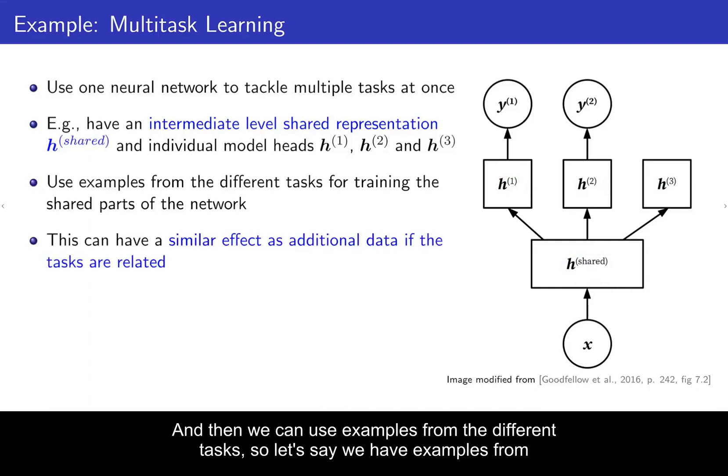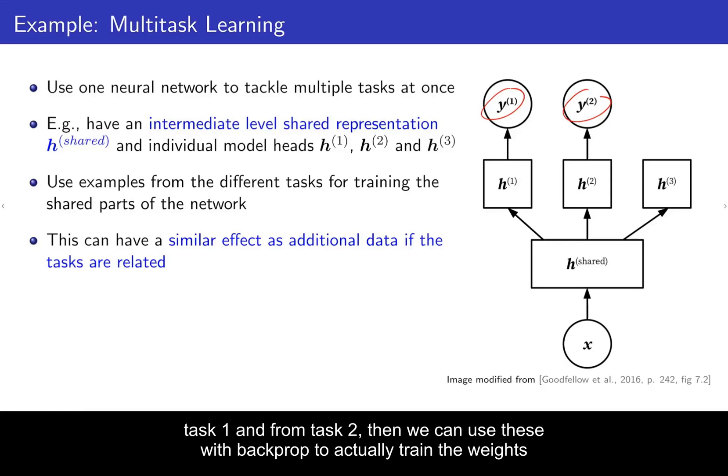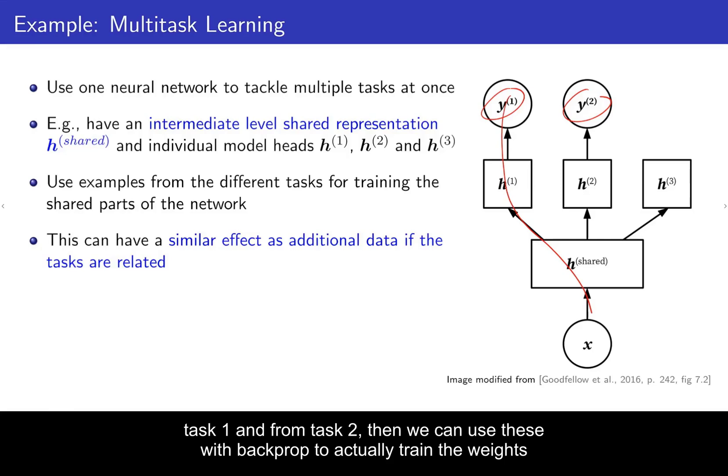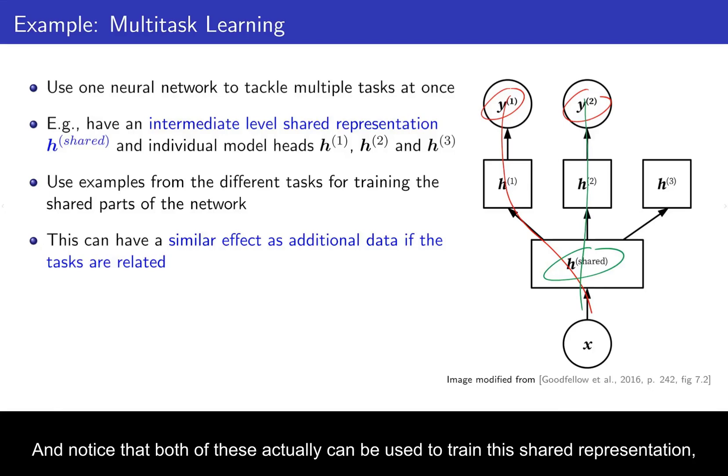And then we can use examples from the different tasks. So let's say we have examples from task one and from task two. Then we can use these with backprop to actually train the weights along this path with samples for task two. And notice that both of these actually can be used to train this shared representation, H shared.